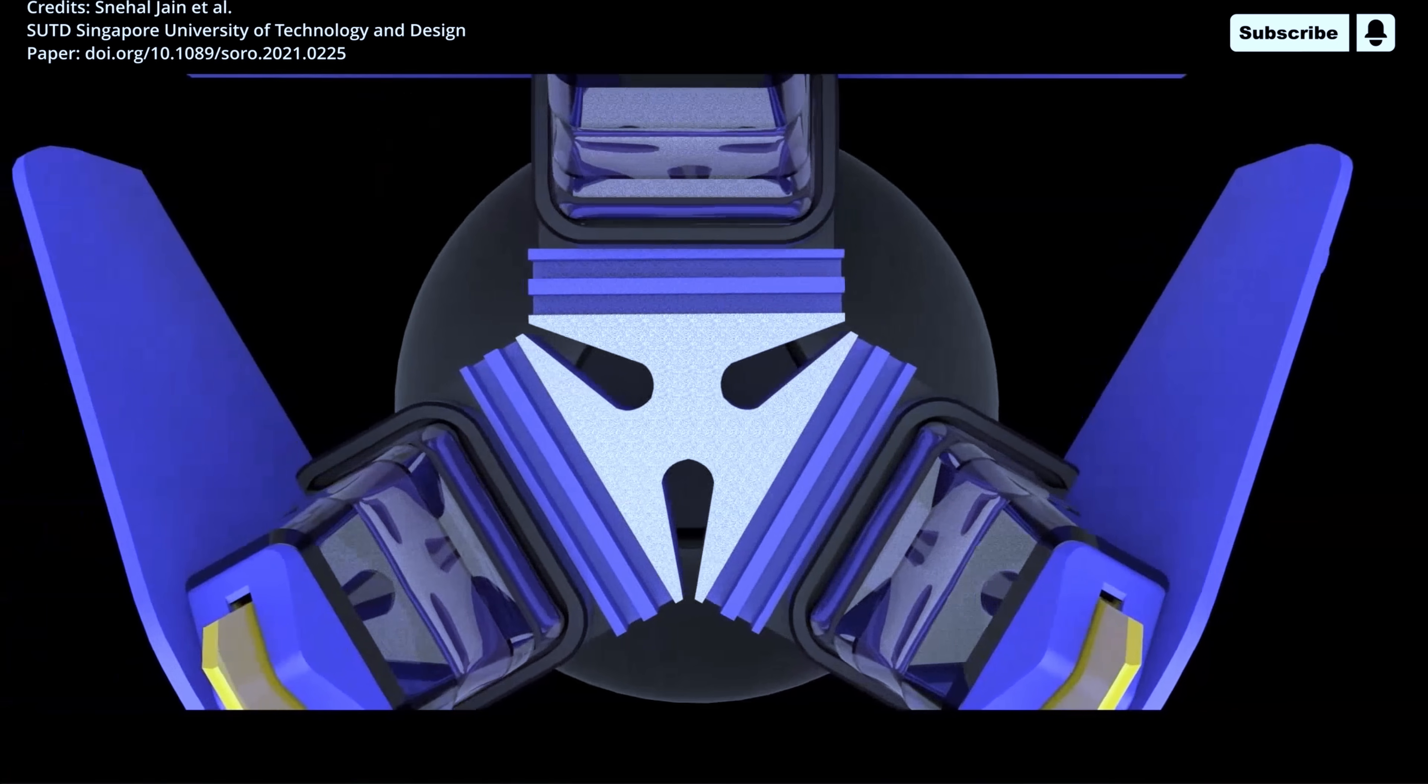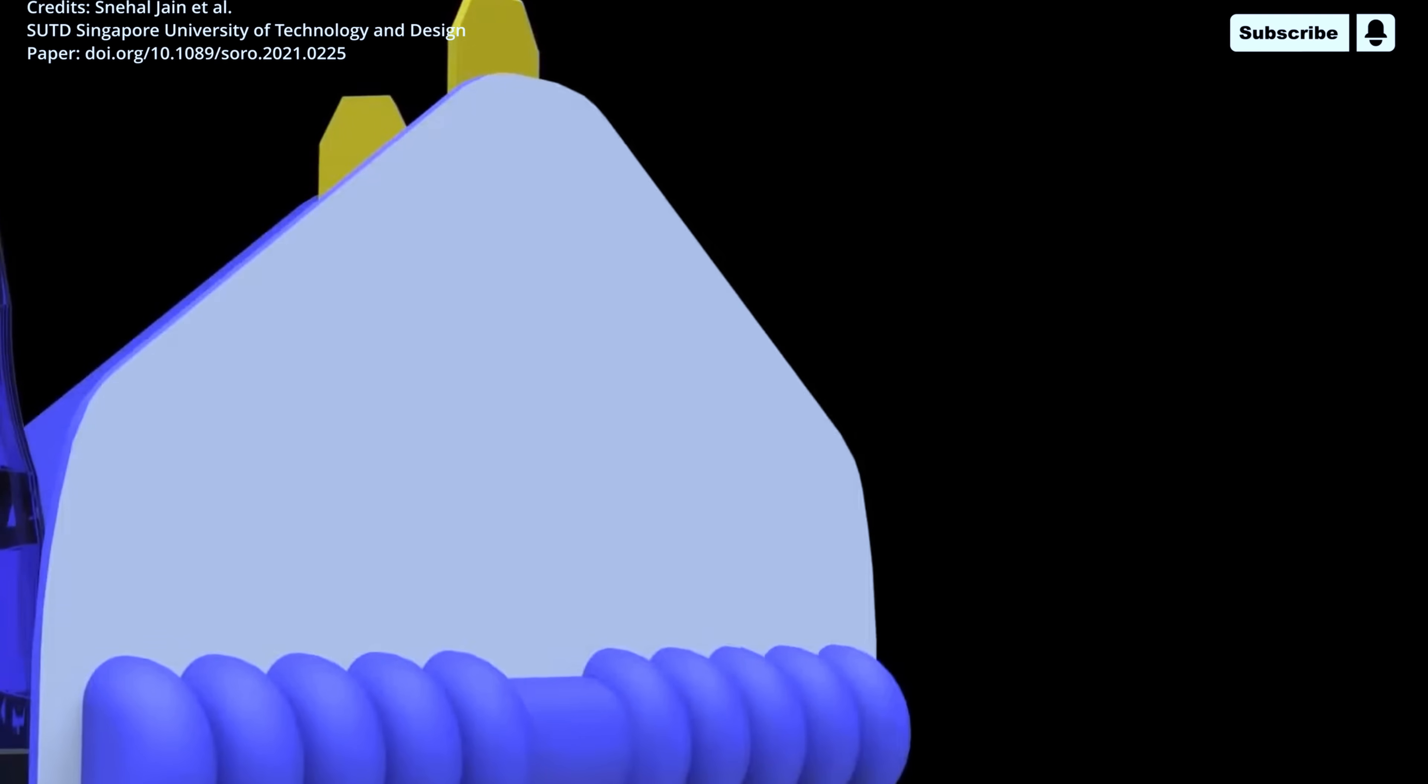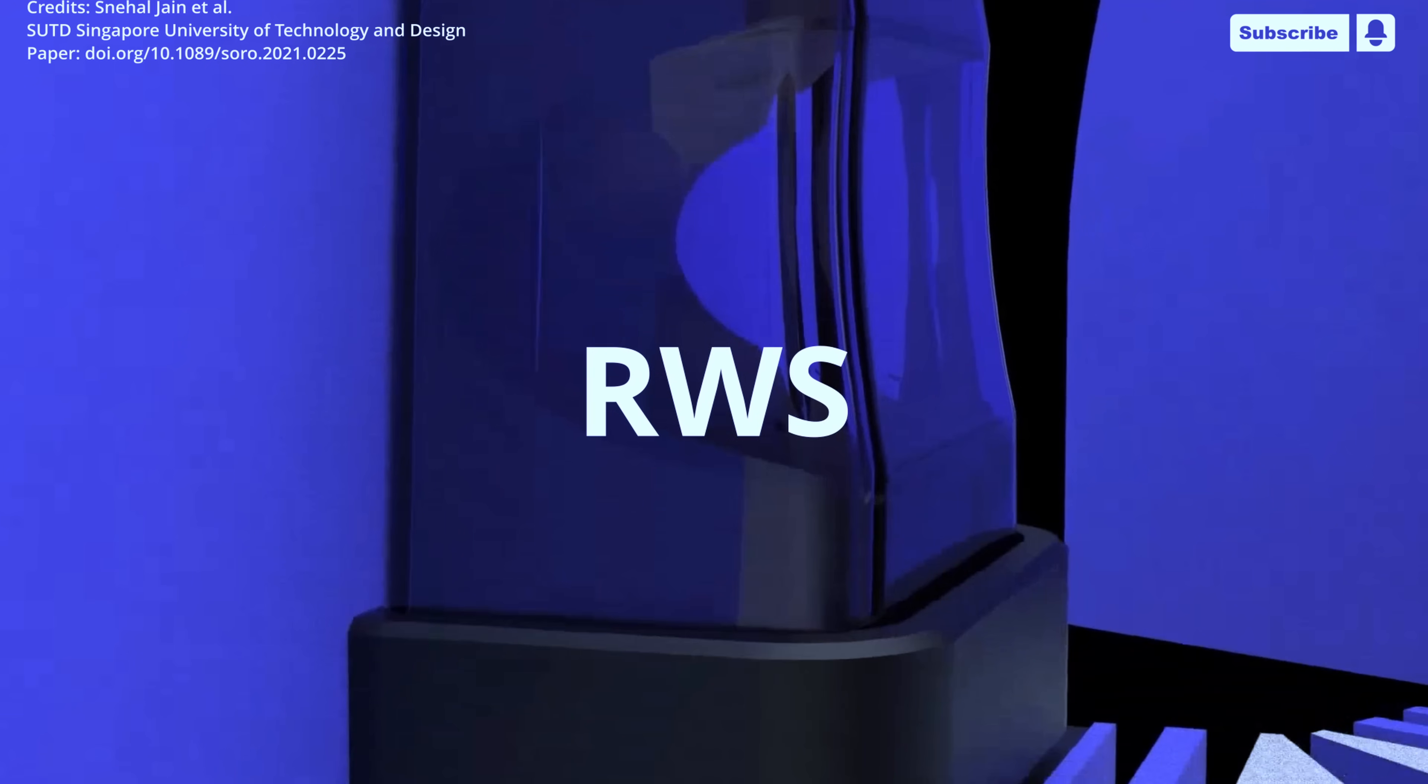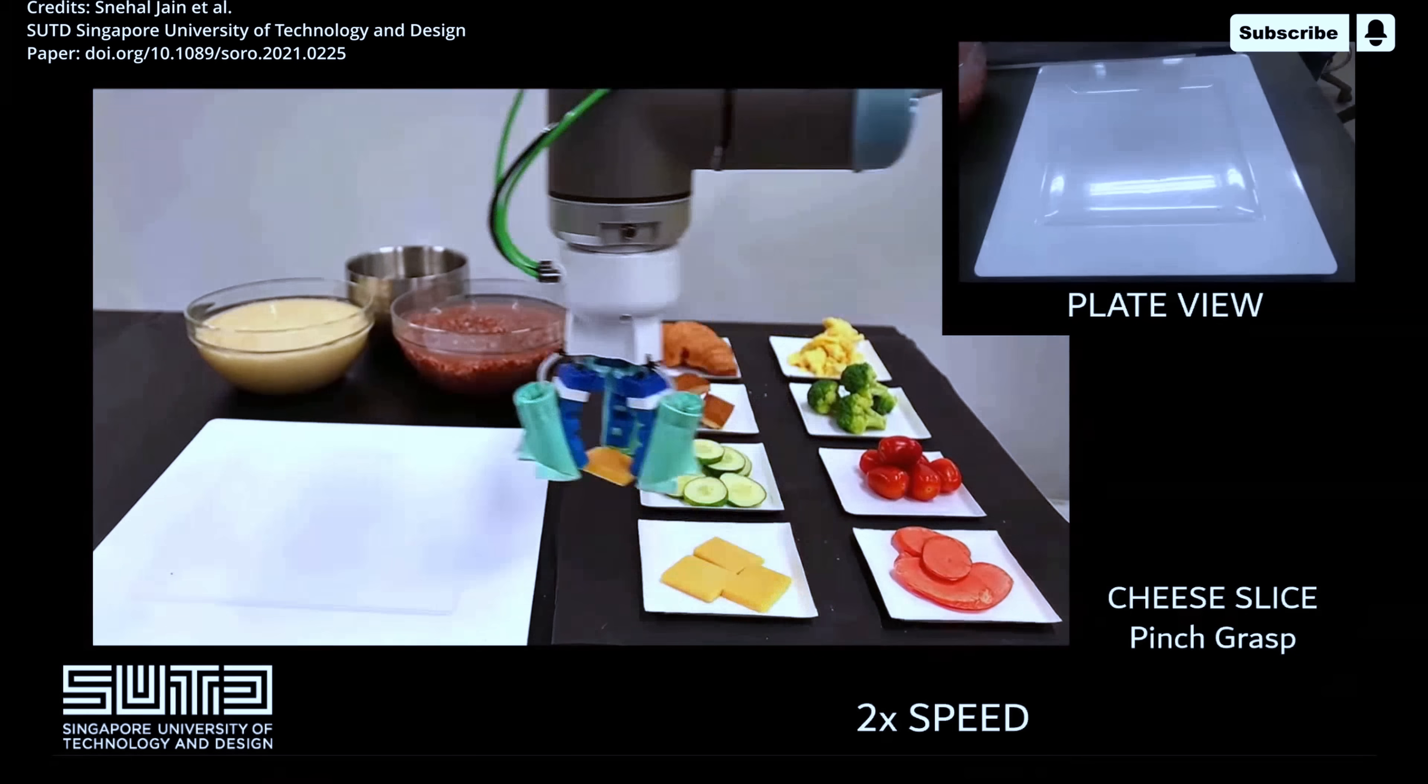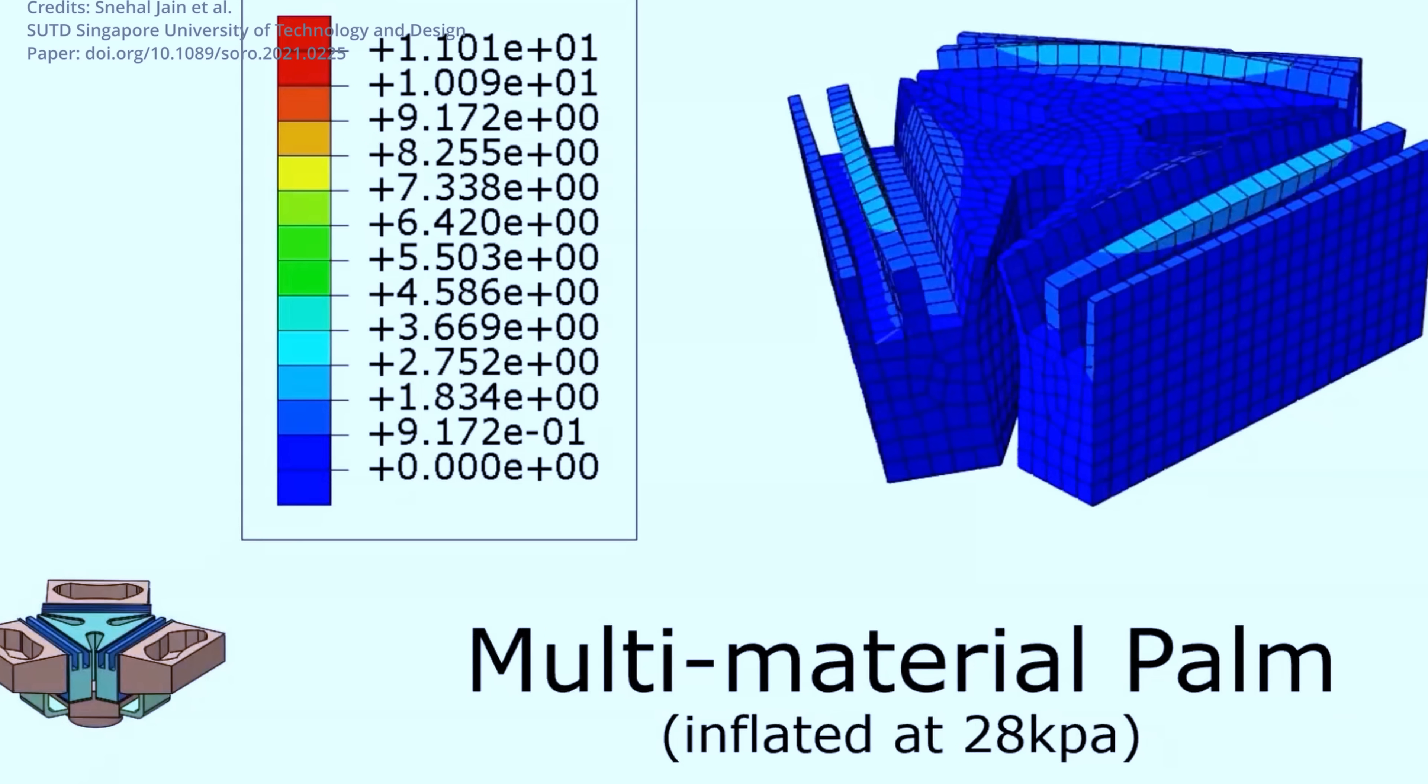Scientists from the bio-inspired robotics and design laboratory at the Singapore University of Technology and Design have created a new adaptable and reconfigurable workspace soft robotic gripper called RWS for short, which can scoop, pick, and grasp a variety of consumer items. Its versatility makes it especially useful for industries such as logistics and food.